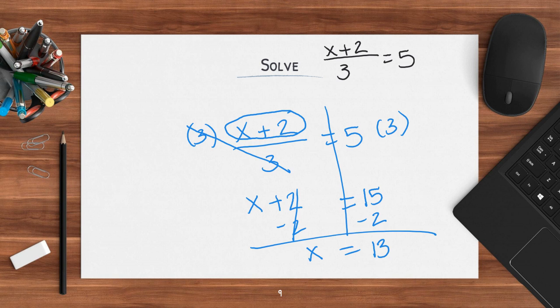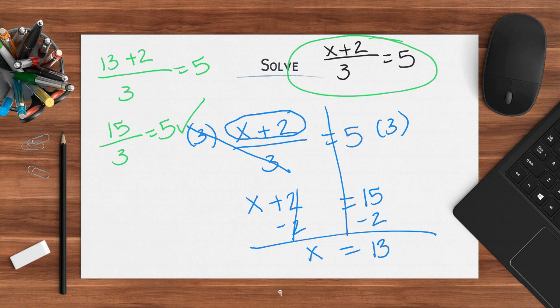I check this by plugging in. I have 13 plus 2 divided by 3 equals 5. I start by doing what's on top: 13 plus 2 is 15. So 15 divided by 3 equals 5 — yes, it does. Whenever you see a problem like this and it looks big and scary, it's not. Start by getting rid of that bottom number: multiply by whatever number is on the bottom, and then you have a simple one-step equation.